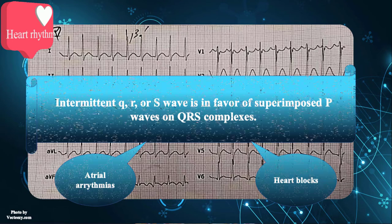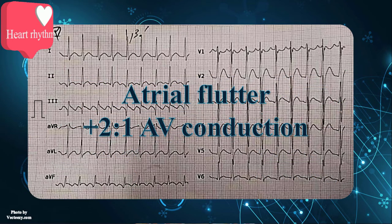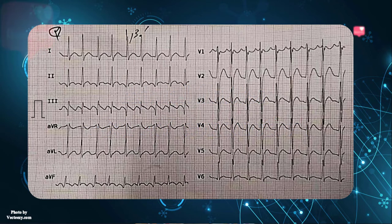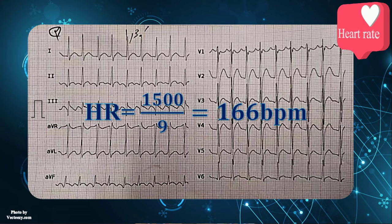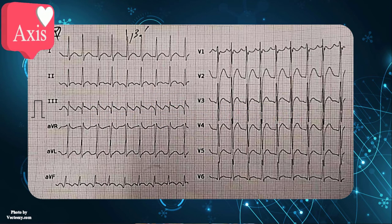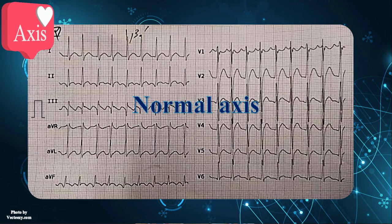In summary, the rhythm is atrial flutter with fixed 2-to-1 heart block. Next step is calculating heart rate. Since the RR intervals are stable and about 9 small boxes, the overall ventricular response is approximately 166 beats per minute. Then we should go through axis determination. QRS complexes are positive in both leads 1 and 2, thereby the axis is normal.